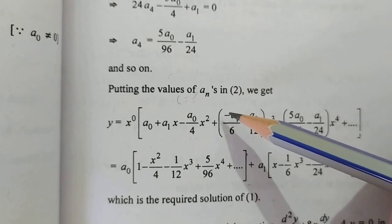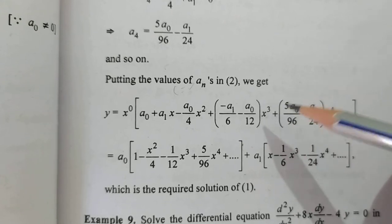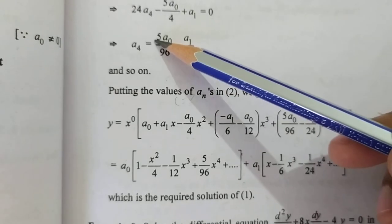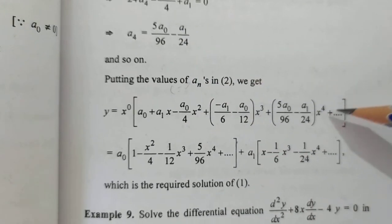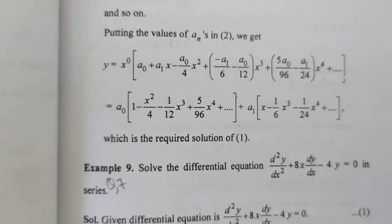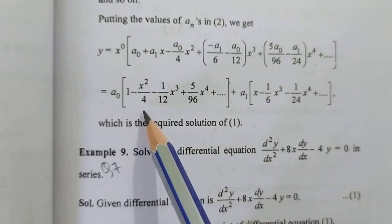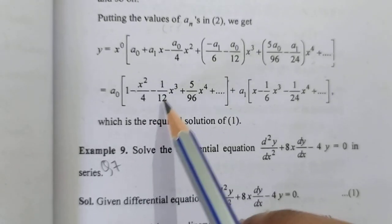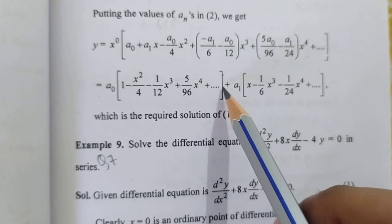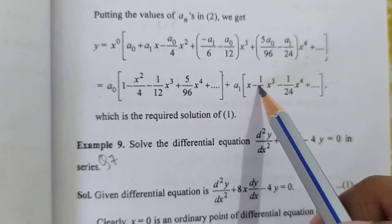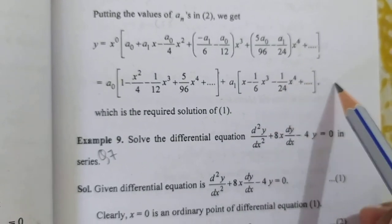Combining the a₀ terms and a₁ terms separately: y = a₀[1 - x²/4 - x³/12 + 5x⁴/96 + ...] + a₁[x - x³/6 - x⁴/24 + ...], which is the required solution of equation 1.